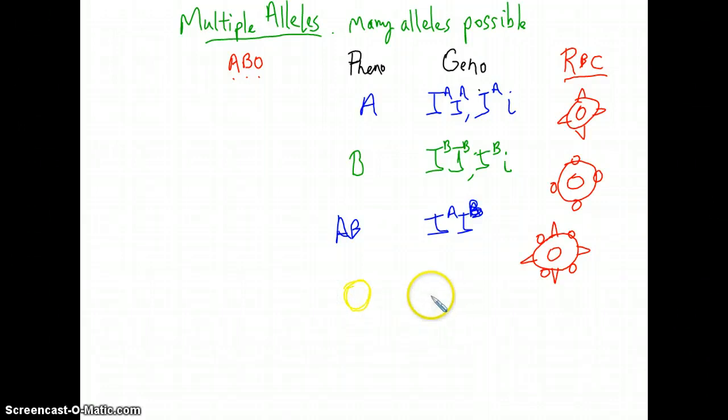The final instance or the final category would be type O blood. Again, if a person has type O blood, you automatically know the person's genotype. They must have two recessive alleles. And if that happens, you don't produce any proteins for the surface related to this ABO blood group.